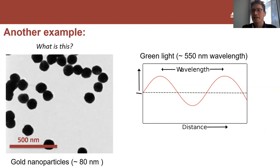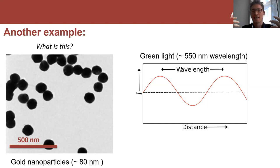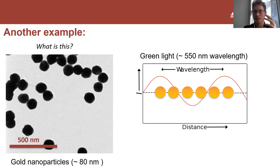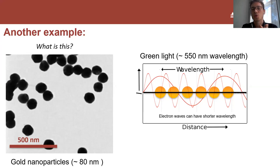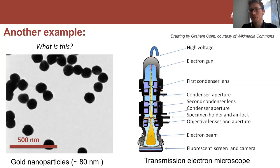You might ask yourself: if these are gold particles, why are they black? The reason is we cannot use a normal microscope to visualize them. The wavelength of green light - the wavelength our eyes are most sensitive to - is 550 nanometers, which is much larger than the actual dimension of the particles. You can't see something with light that is much bigger than the particles. You might have heard in school that we can have electron waves with much shorter wavelengths, and that's what does the trick. However, we only have black and white because we only have electrons passing through the particles or not - which is why the pictures on the next slides are always recorded with a transmission electron microscope.